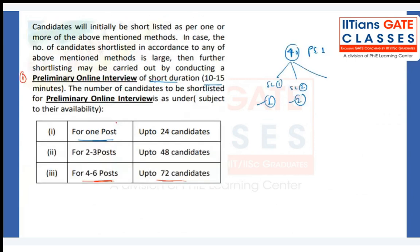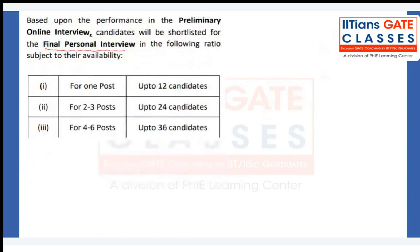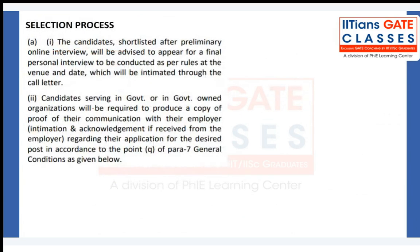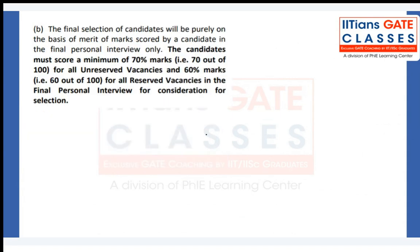After the preliminary online interview, the shortlisted candidates - for example, from 48 reduced to 24, or from 72 to 36 - will be called for the final personal interview. The final personal interview will not be online; candidates will be informed of the venue and date and must attend in person. The selection process consists of two stages of interview, and the final advantage is based on the final personal interview, not the preliminary online interview.